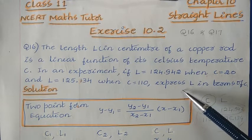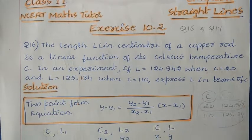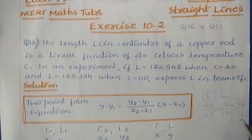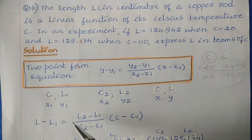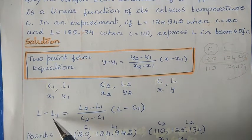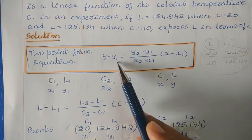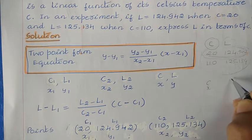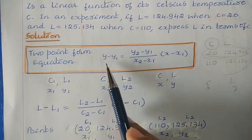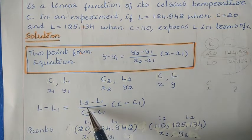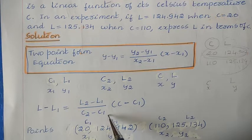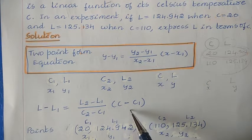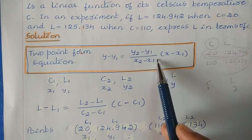The question asks us to express l in terms of c. We take c as the x value and l as the y value. So the formula becomes: l minus l1 = (l2 minus l1) divided by (c2 minus c1), into (c minus c1). We can directly substitute the values into this adapted formula.